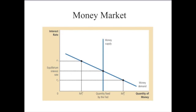Now we'll graph money supply and money demand. Money supply is completely vertical. Money demand slopes downward — as interest rates get lower, the cost of holding money is lower, so demand increases. You can think of it like any other demand curve: the interest rate is the price, the cost of holding money, and the quantity of money is on the horizontal axis.